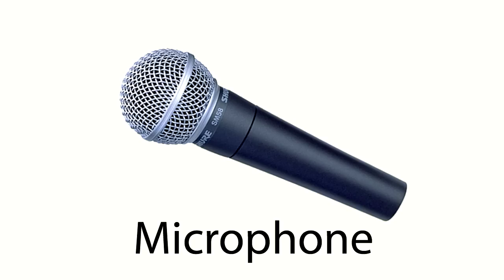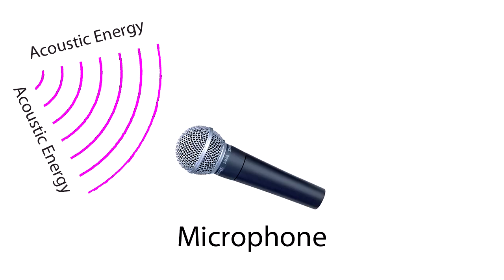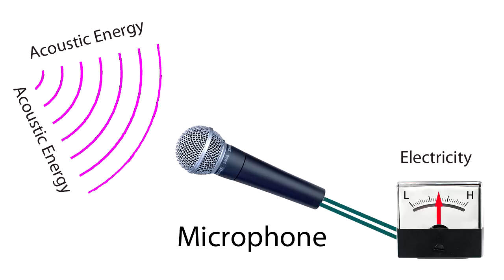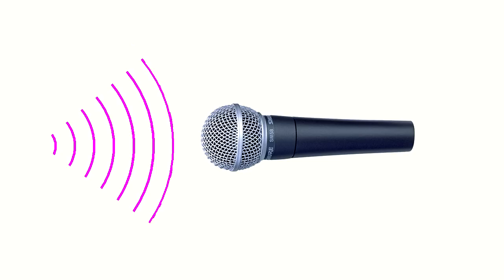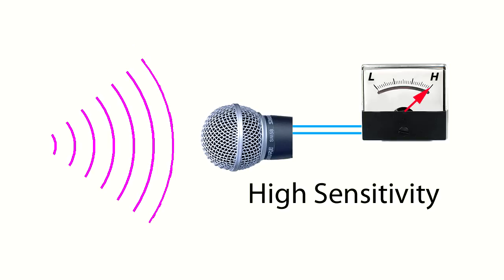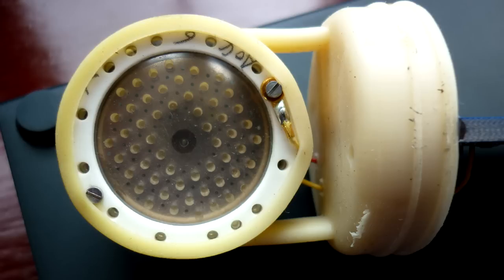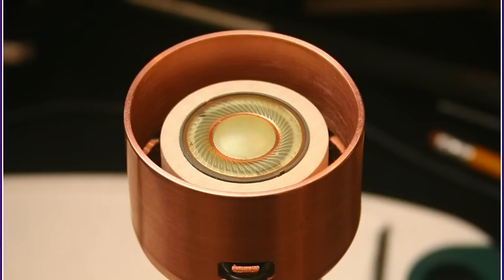A microphone is a device that converts sound or acoustic energy into electricity. This is called the microphone's signal. A microphone that produces a strong signal is referred to as having a higher sensitivity than one that produces a weaker signal. The most important component in any microphone that affects its sensitivity is its diaphragm. Its size, thickness, materials, and even how it is attached are all contributing factors to its sensitivity.